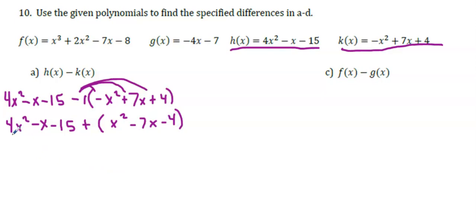So that's going to make this +x² - 7x - 4. Now, when I'm adding, I can just look at like terms. 4x² + x² is 5x². -x + (-7x) is a -8x. And then -15 + (-4) makes -19. So we have our answer, 5x² - 8x - 19.